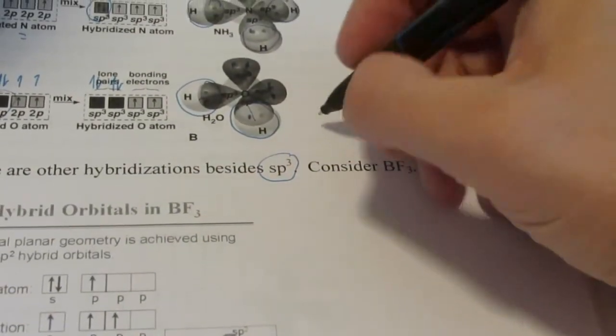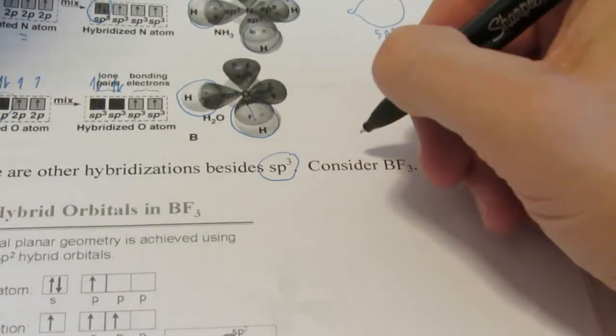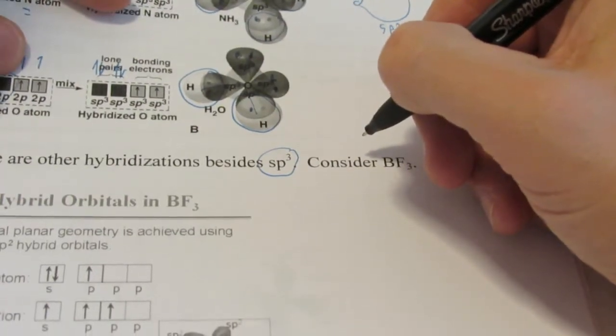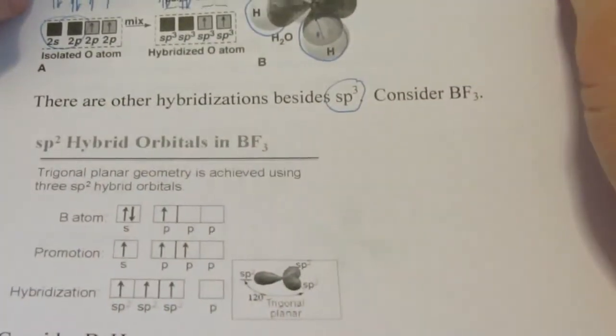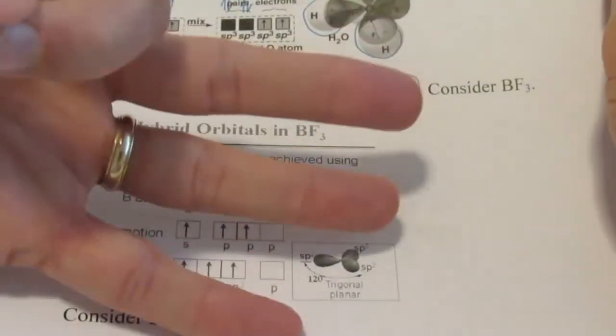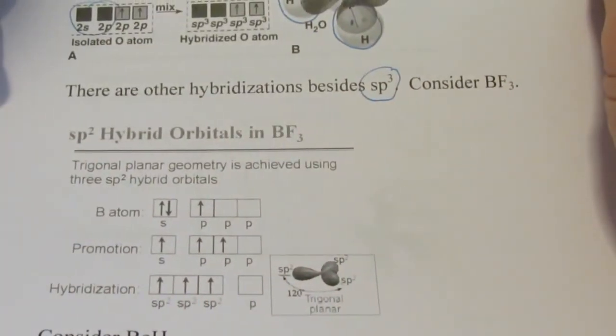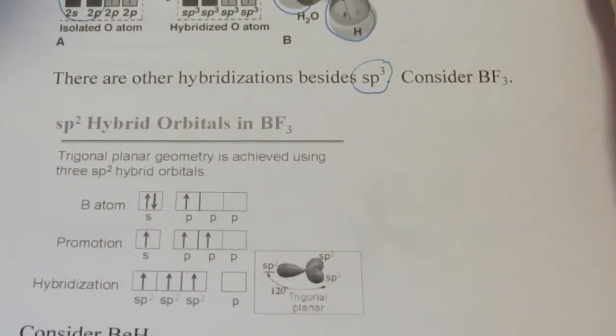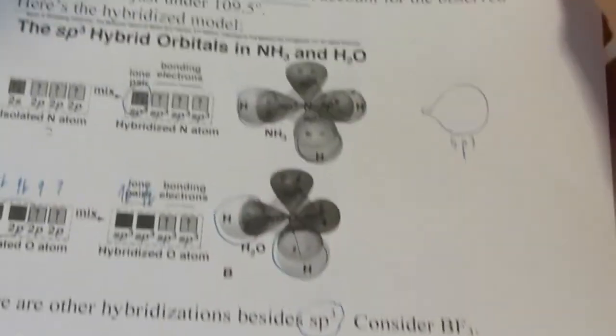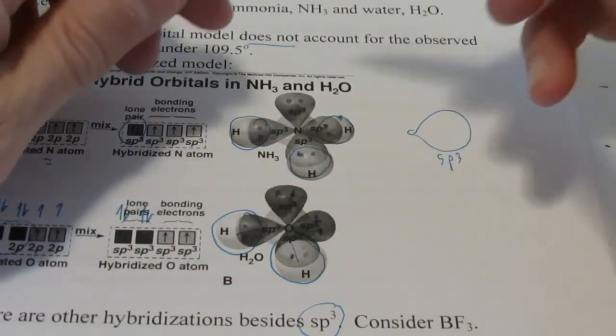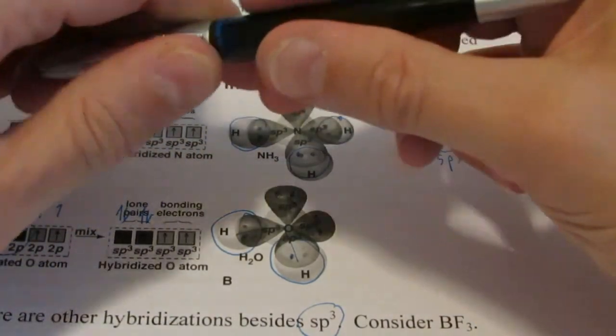Now there are other types of hybridization besides sp3. You see sp3 when there are 4 pairs around a central atom. There's also something called sp2 hybridization. And you see that when there are 3 pairs around a central atom. Alright. We'll wrap that up. We'll do sp2 maybe an sp hybridization later. For right now we'll call it a day. Hope you enjoyed this.